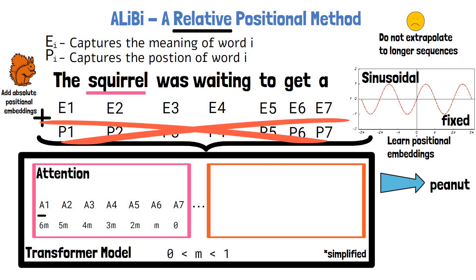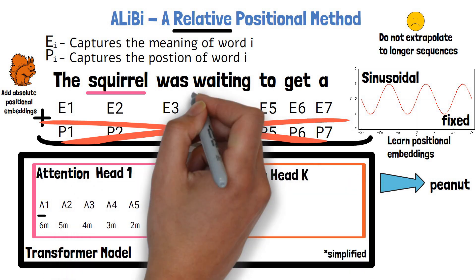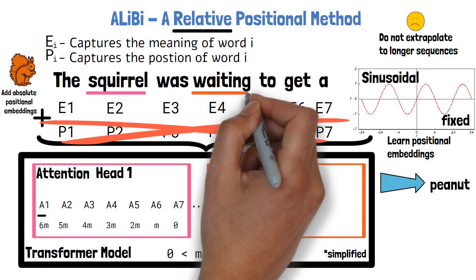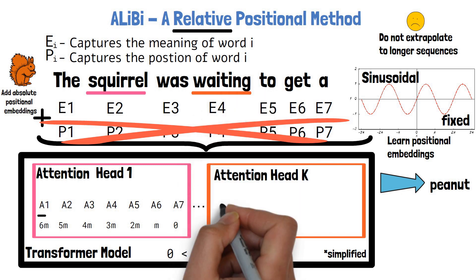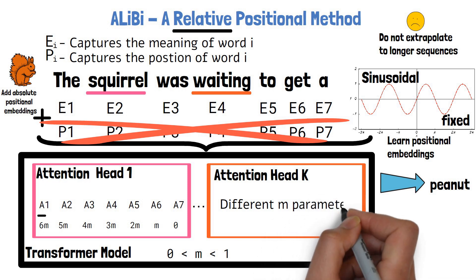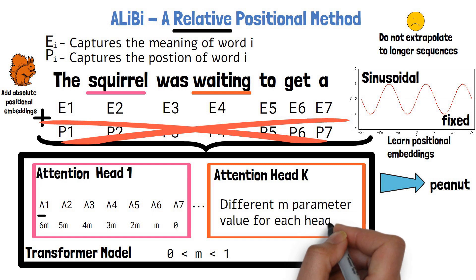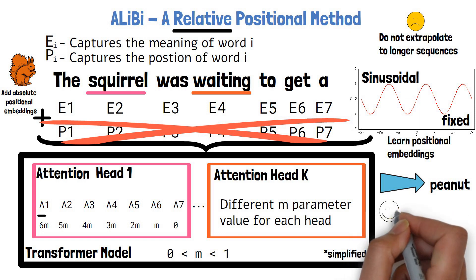There are usually more than 1 attention blocks in a model, in order to let the model pay attention to multiple parts of the sequence. Each block is also called an attention head. And for each such block ALiBi sets a different value for m, for better diversification. Seeing that if m is large, then farther away attention scores will be impacted much more than if m is small, so this diversification can help.